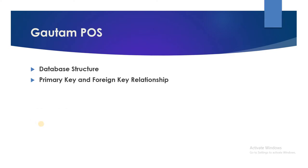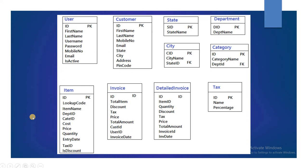I will give the application the name 'Gautam POS'. In this video I am going to talk about the database structure — how I am going to create the database for this POS application, including the primary key and foreign key relationships. First we need a user table, with fields: ID, first name, last name, username, password, mobile number, email, and is-active.